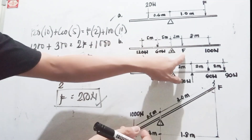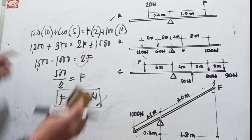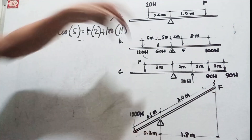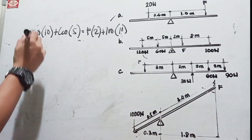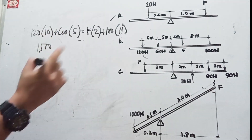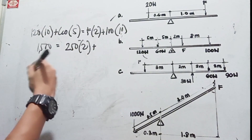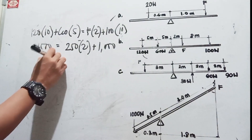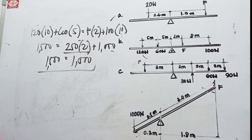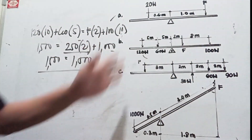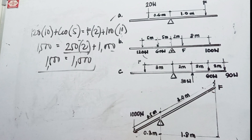We transpose 1,000, giving 500 divided by 2 equals 2F, so we get 250 Newtons. To verify: substitute 250 back — 250 times 2 is 500, plus 100 times 10 is 1,000, giving 1,500. The left side also equals 1,500. Clockwise and counterclockwise forces are equal, confirming the force is 250 Newtons.